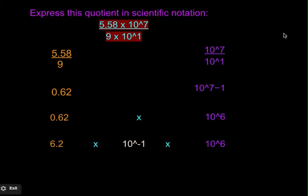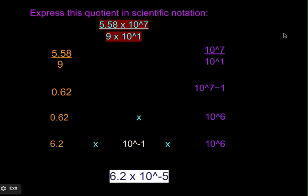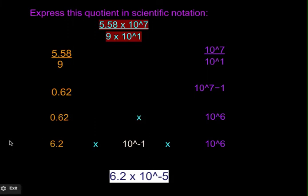Once again, add the exponents, and you would have 6.2 times 10 to the fifth. And that's your answer for the second one. This is how you multiply and divide in scientific notation. Thanks.